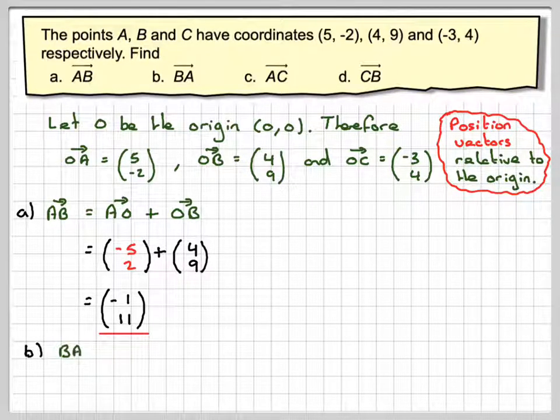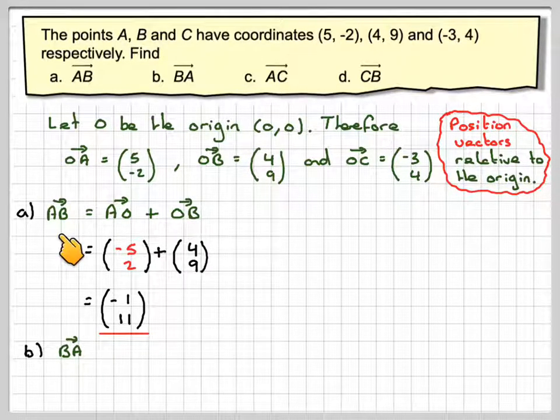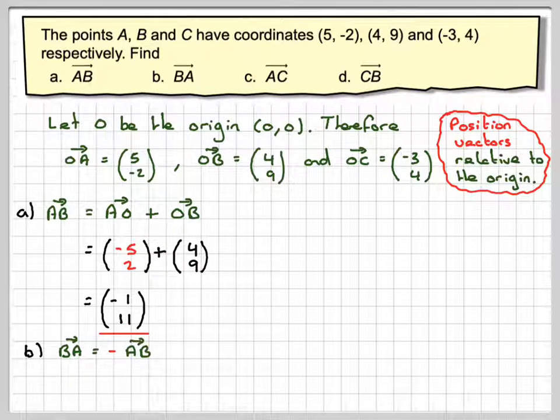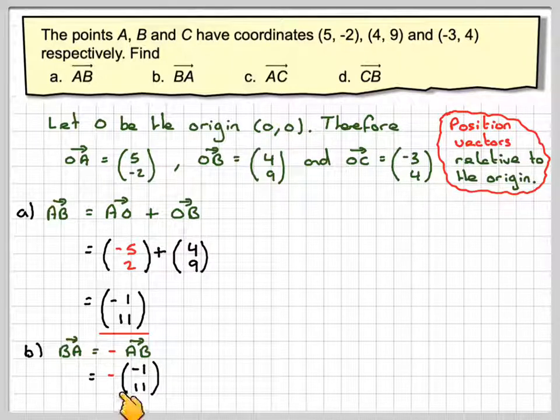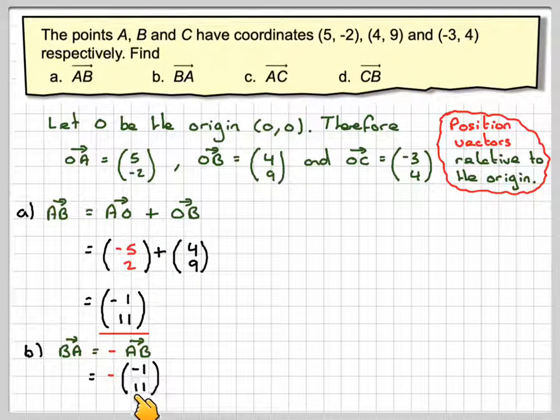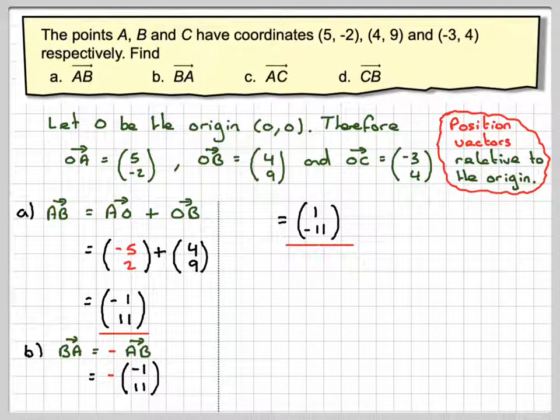Now, to find the vector BA, because I've got the vector AB, this is vector AB, but in the opposite direction. So all I need to do is put a minus sign in front of this vector. So that becomes -AB, which is -(-1, 11), which gives me an answer of (1, -11).